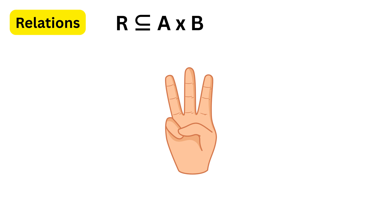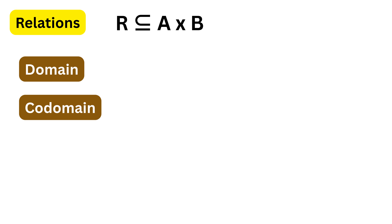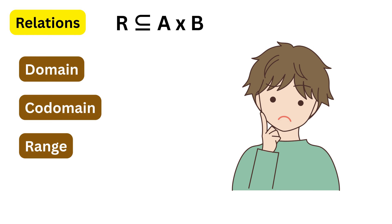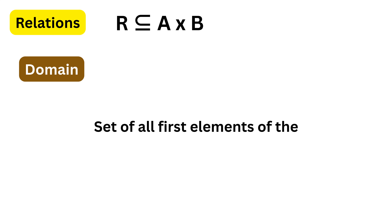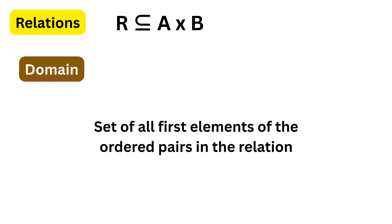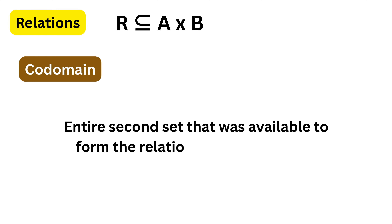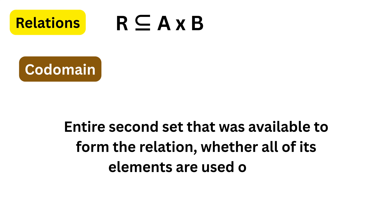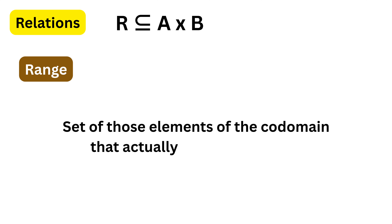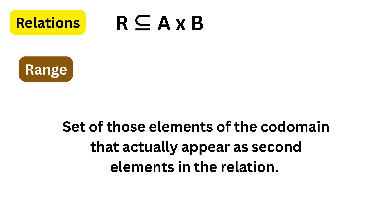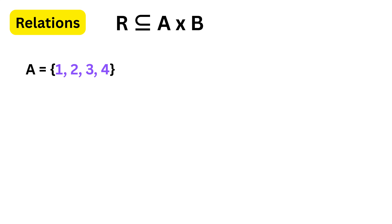This shows that a relation always comes from the Cartesian product, but it includes only those ordered pairs that satisfy a given rule, not necessarily all possible pairs. Now every relation has three very important parts called domain, codomain, and range. The domain is the set of all first elements of the ordered pairs in the relation. The codomain is the entire second set that was available to form the relation, whether all of its elements are used or not.